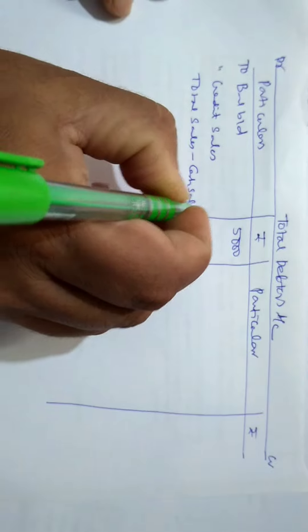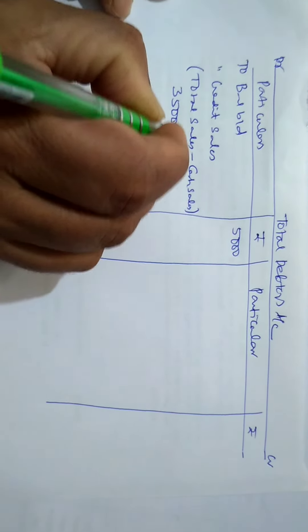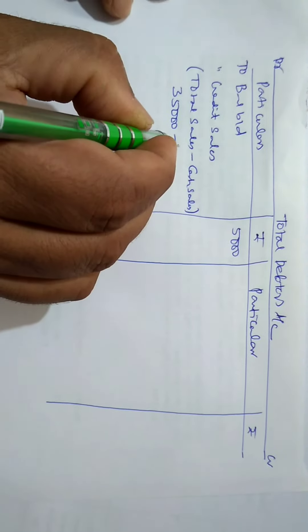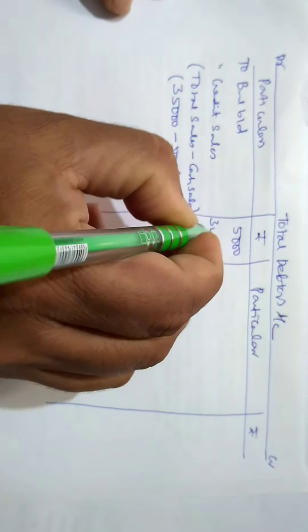Total sales minus cash sales. Total sales is given 35,000 minus cash sales is 5,000. It becomes 30,000. See, in this problem, credit sales is given.